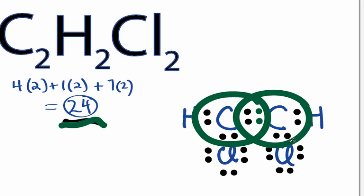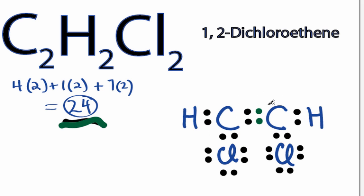The octets are complete on all atoms in the C2H2Cl2 Lewis structure. For this structure, because we have chlorines on the first and second carbons, we're going to call it 1,2-dichloroethene. If both chlorines were on the first carbon, it would be 1,1-dichloroethene. That's the Lewis structure for C2H2Cl2. This is Dr. B.